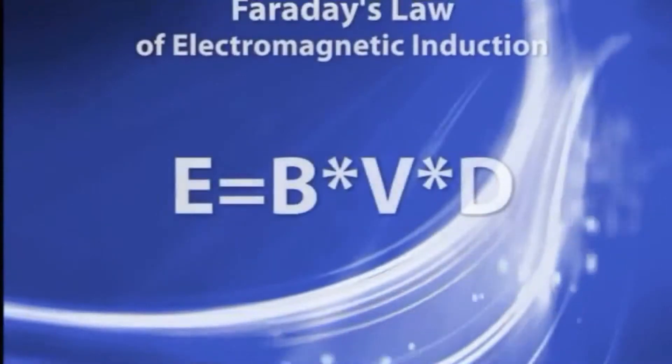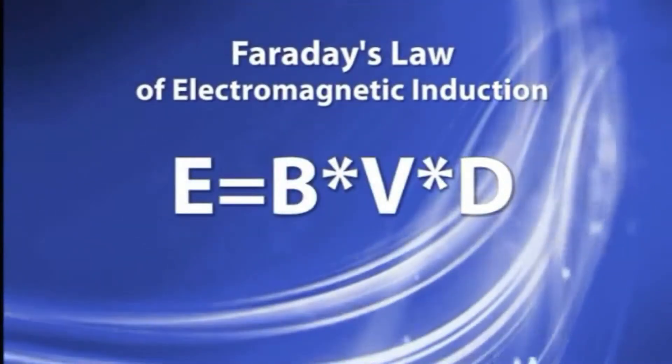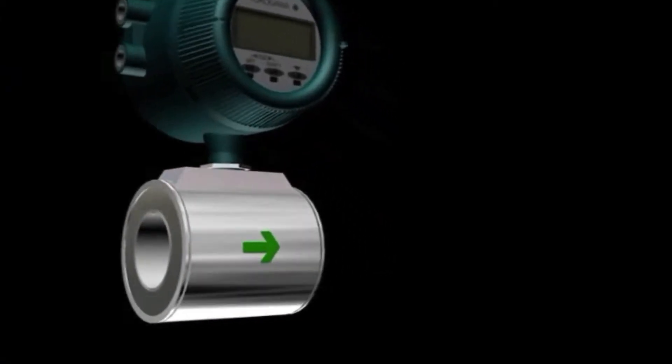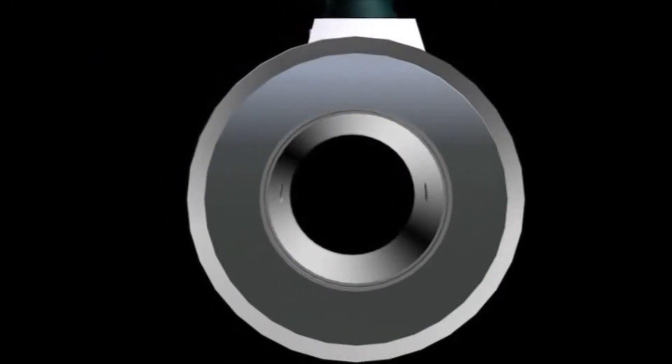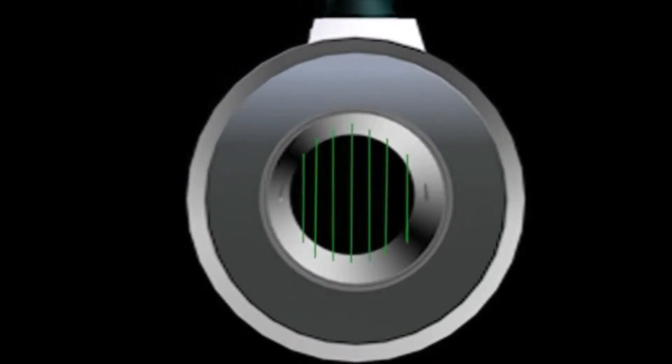This principle employs Faraday's law of electromagnetic induction. Magnetic flow meters are built so the direction of the magnetic field is perpendicular to the flow, and the line between the electrodes is also perpendicular to the flow.